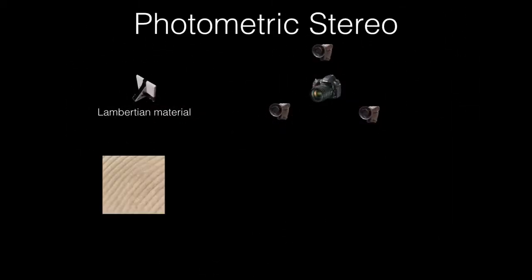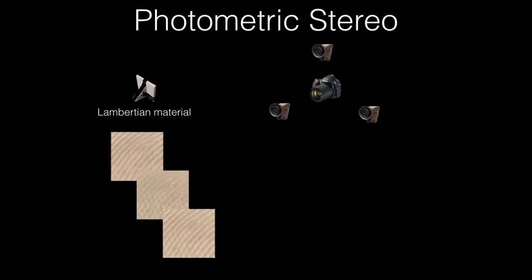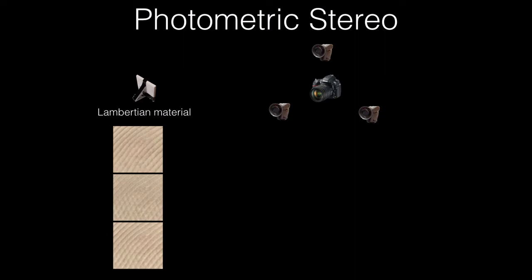Photometric stereo is a commonly used, lightweight method for the surface detail recovery of Lambertian materials. It infers the surface normals from as few as three observations under directional illumination.